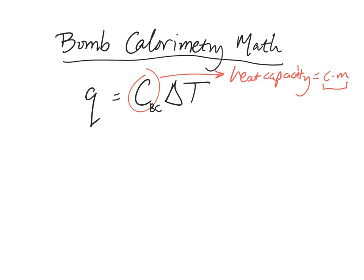So instead of q equals c m delta t like a coffee cup calorimeter, we just have q equals big C delta t. And that q is still the q of the bomb calorimeter, that's its heat change, so how much energy the bomb calorimeter absorbs. It should always be positive because the bomb calorimeter is always absorbing energy.